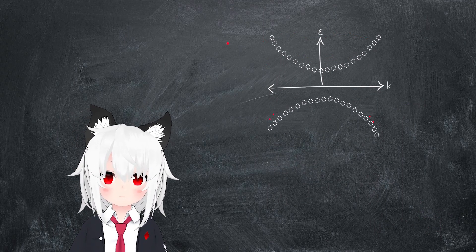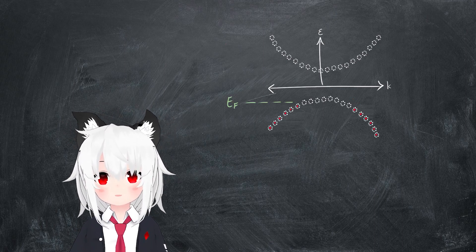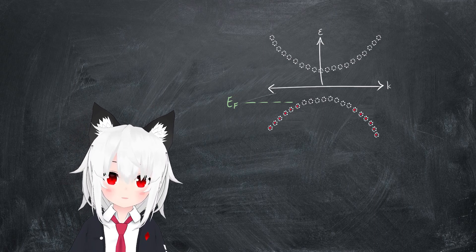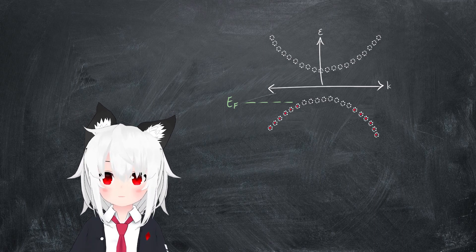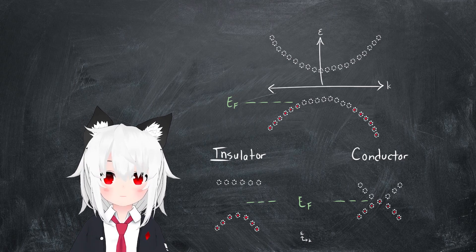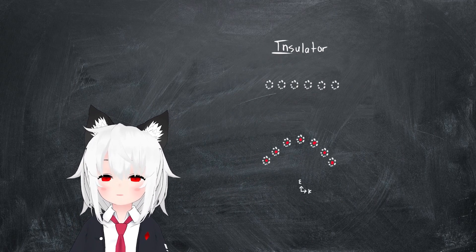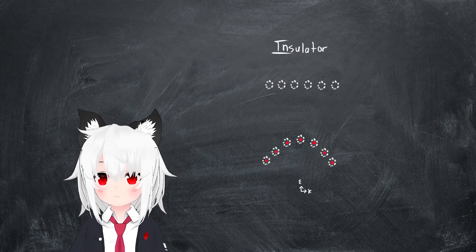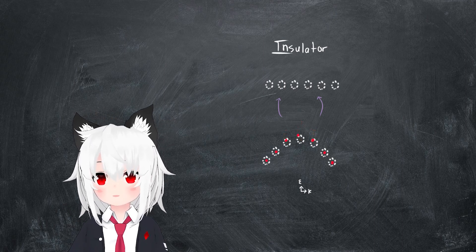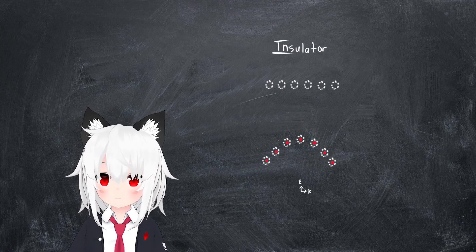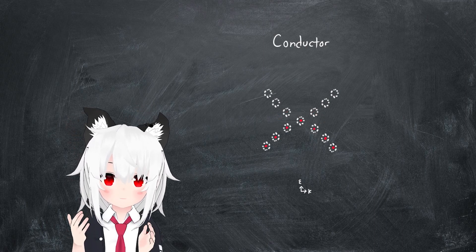Actually filling up this band structure with real electrons will then allow us to define an energy level given by the energy of the highest energy electron. This is what's called the Fermi level, and in a previous VOD we saw how this allowed us to classify materials as either insulating or conducting based on the presence or absence of a gap in the band structure around this Fermi level. In a nutshell, this is because if there is a gap, then it becomes difficult for the electrons to reach the next available quantum energy state, making them immobile and giving rise to electrically insulating behavior. On the other hand, if there is no gap, then the opposite is true, and this is generally associated with electrically conducting behavior.